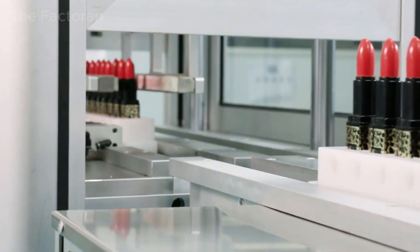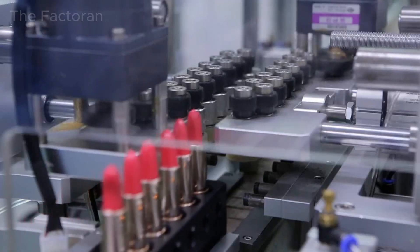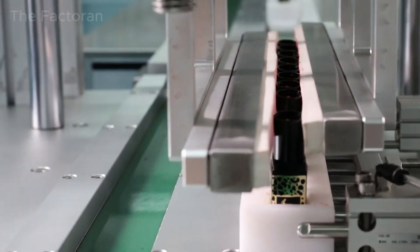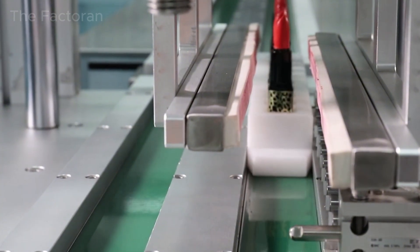After leaving the heating zone, the lipsticks continue through a set of mechanical rollers. These rollers rotate the tube, causing the lipstick to slowly retract into its correct position within the twist-up mechanism.